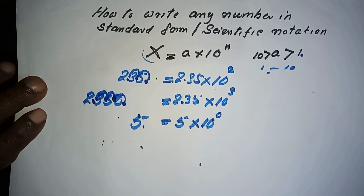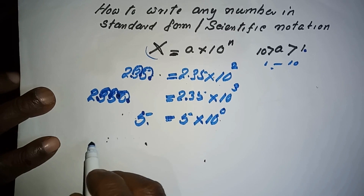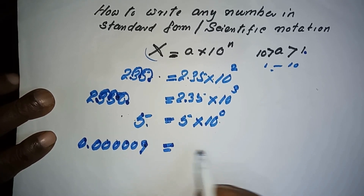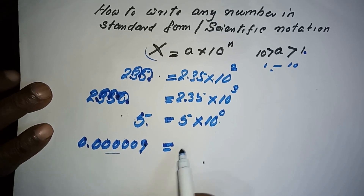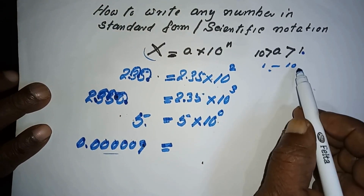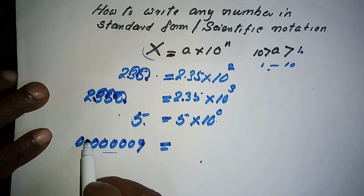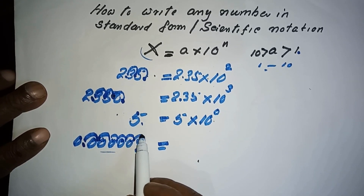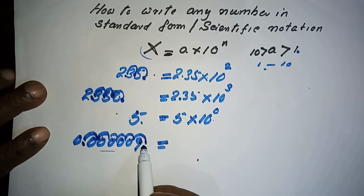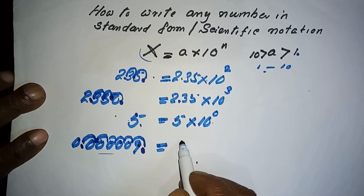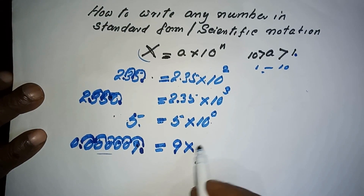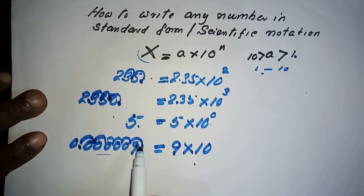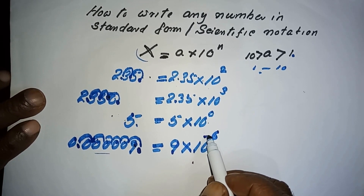When you write a whole number like 5 in scientific notation, it becomes 5 × 10⁰. Now take a complete decimal number: 0.009. To bring this to a number between 1 and 10, we shift the decimal point to the right — 1, 2, 3, 4, 5, 6 places — and the number becomes 9, which is between 1 and 10. We moved 6 times.